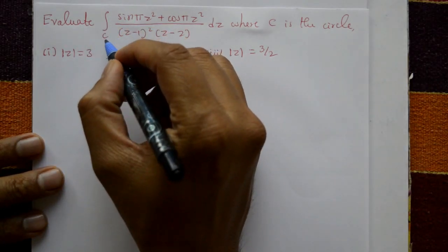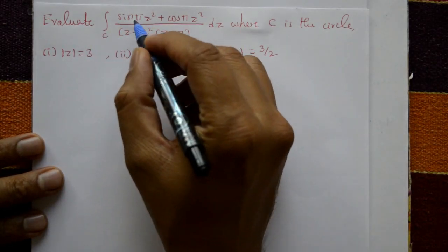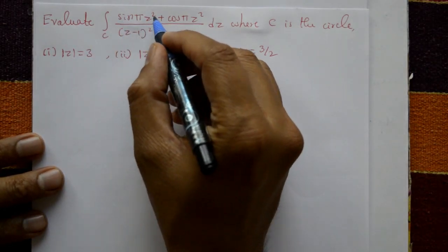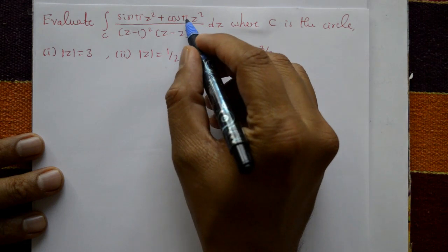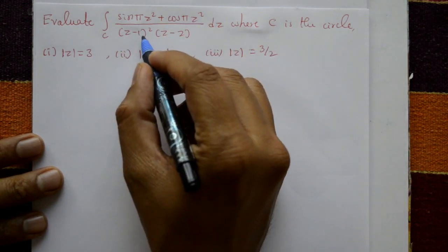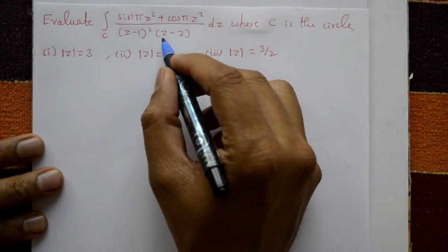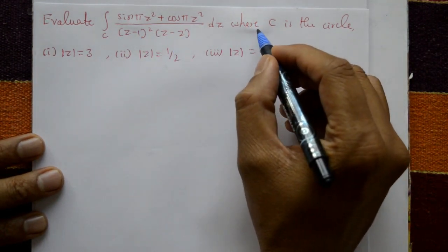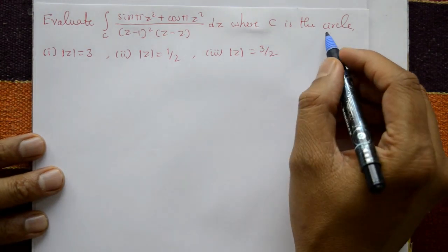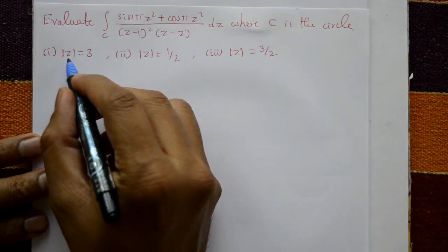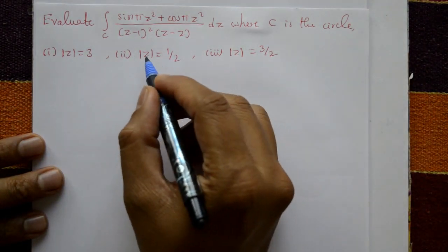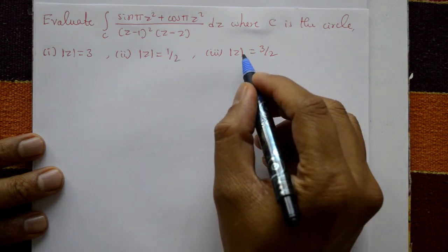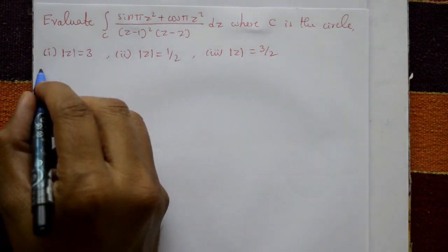Evaluate the integral of (sin πz² + cos πz²) divided by (z minus 1)² times (z minus 2), dz, where C is the circle: first, |z| = 3; second, |z| = 1/2; third, |z| = 3/2.